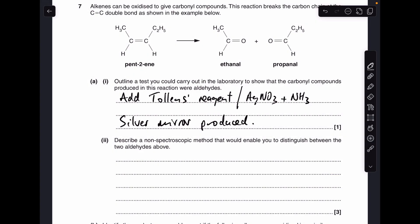Okay, so make a start. Part A, the test to show that the Carbonyl Compound produced was an aldehyde. Add Tollens Reagent, or you could say add silver nitrate and ammonia, and the result is a silver mirror is produced.